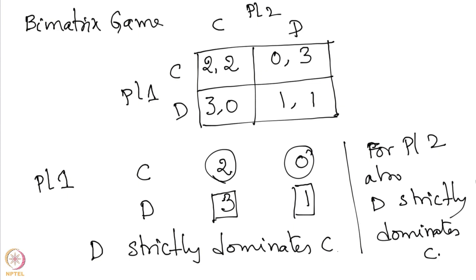Because both players are maximizing their utility, no one would like to play C because D is a better strategy for them. Therefore, both of them will play D, and hence (D, D) is going to be the equilibrium in this game. This is known as solving the game by dominance.